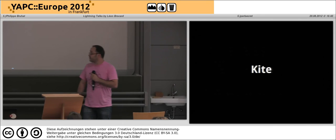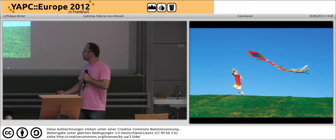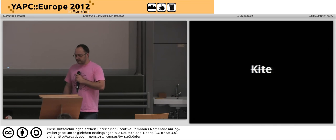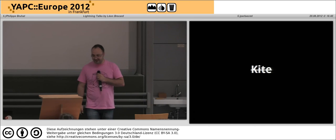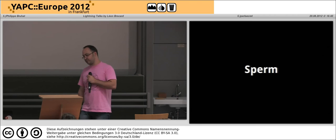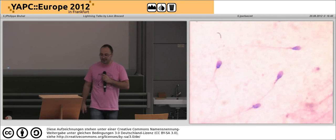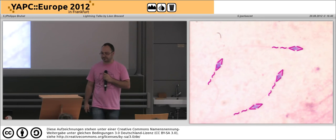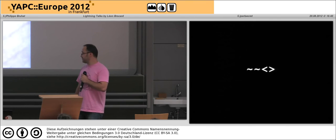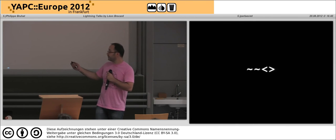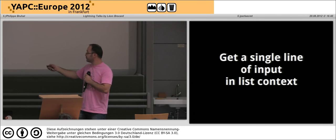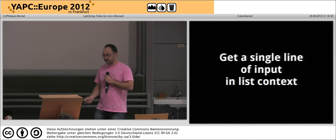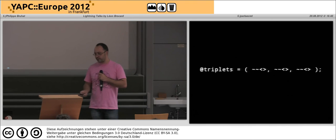The next one I wanted to talk about is the kite operator. It looks like this. I don't like the name either, but the name I came up with is probably not as good and doesn't fit in an official manual page. It's a very simple operator — actually a combination of another secret op, which is the inchworm. It gives you a single line of input in list context, which is not very often useful, but is sometimes.